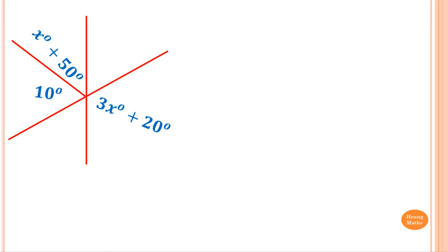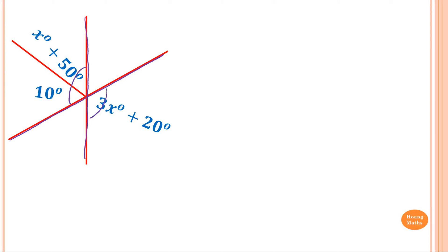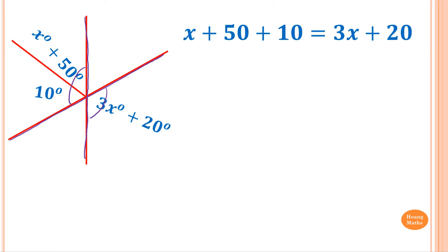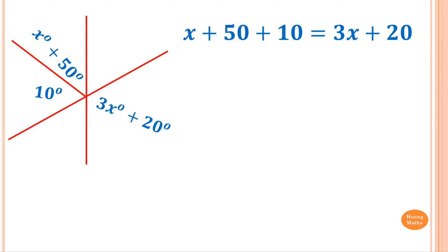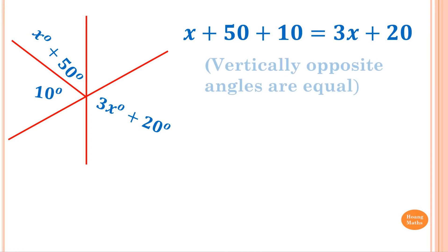We know that this angle and this angle are vertically opposite angles, because these two lines form a straight line and combine to become vertically opposite. So X plus 50 plus 10 is equal to 3X plus 20. The reason is vertically opposite angles are equal.